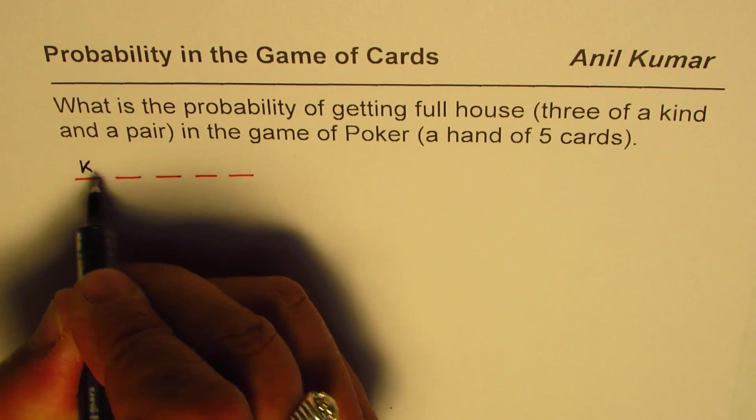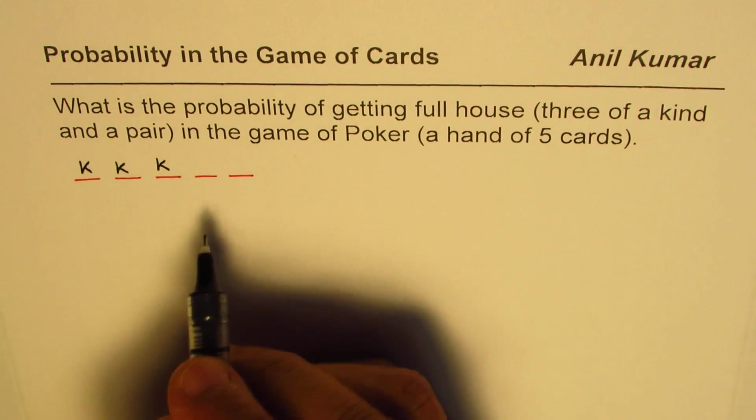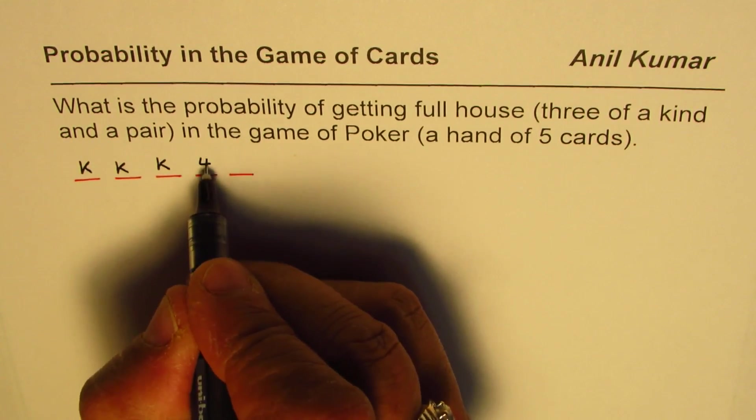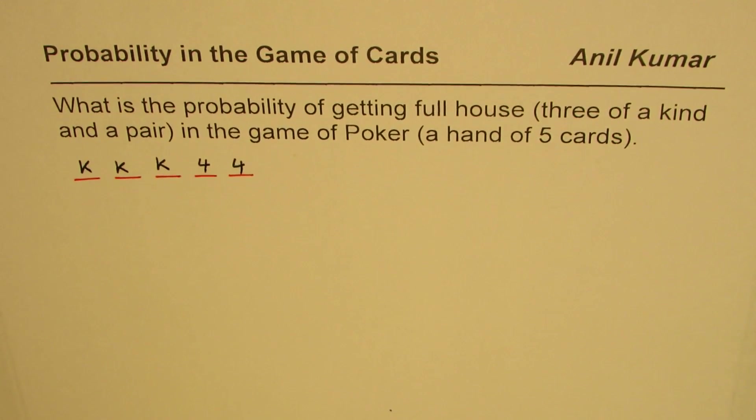Full house will mean three of a kind. Three of a kind means let's say we have three kings, right? Three kings and a pair. So something else, it could be like this and a pair.